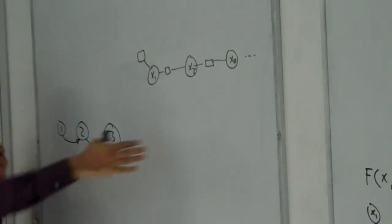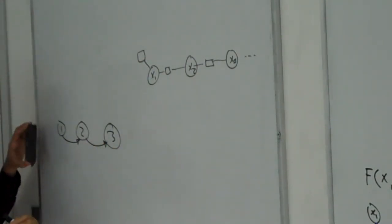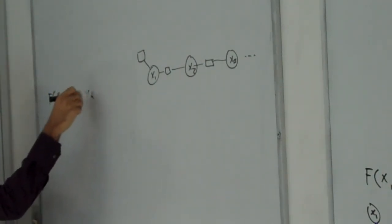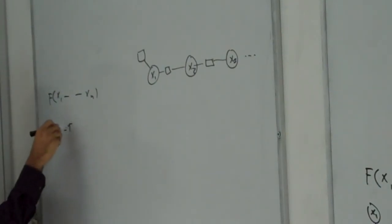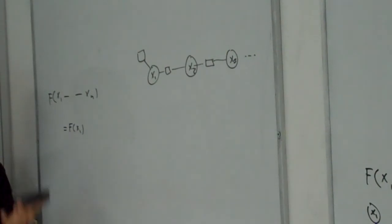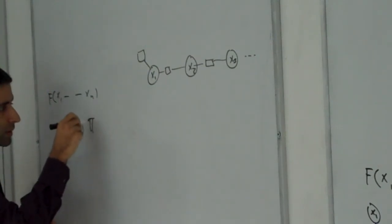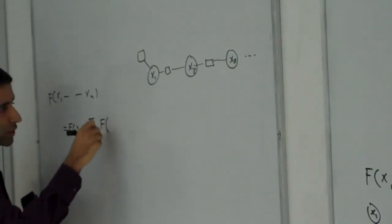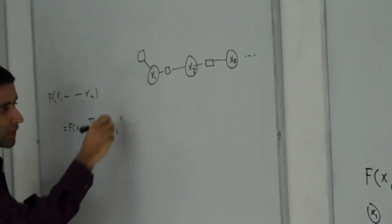Because of this, if I want to show the f(x1 to xn) is equal to f(x1) because the first set of the system is now and it's a multiplication of the function of each state depend on the previous state.